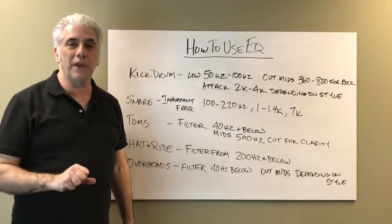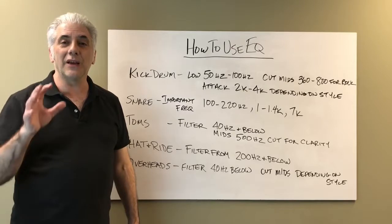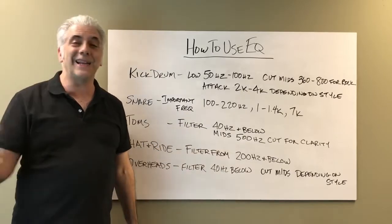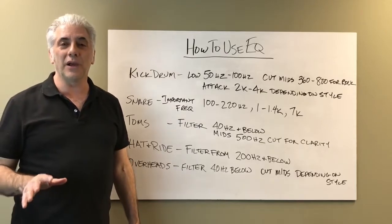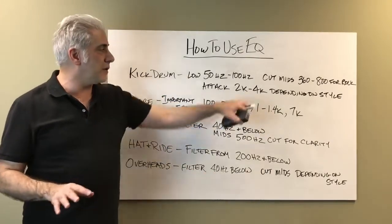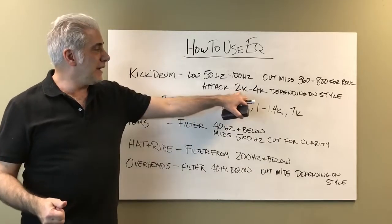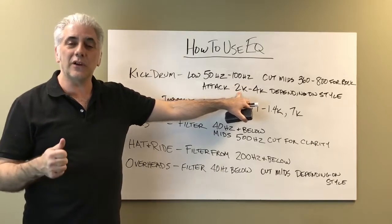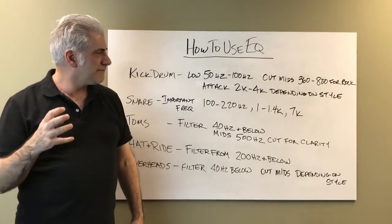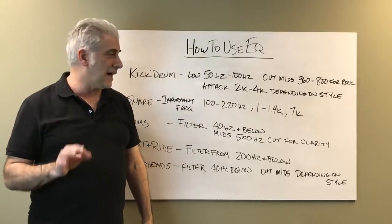The mid-range cut on the kick depends on the sound and style. On a Neve 1073 I'll cut at 360 Hz; on an SSL I'll probably cut between 500 and 800 Hz. You want to dump that mid range because it clouds up your mix — unless you're going for a Led Zeppelin kick drum sound, which has a lot of mid range and one K. For the attack of the kick, it could be anywhere between 2k and 4k. For Metallica it's going to be 5k or 6k, boosted high. Andy Wallace would go for the lower end of that spectrum for more chunk and tone.